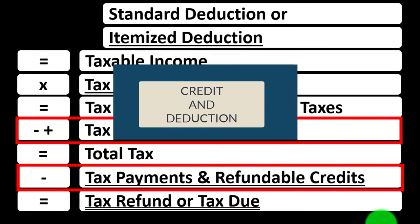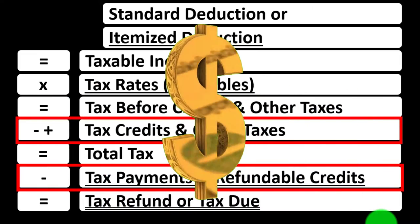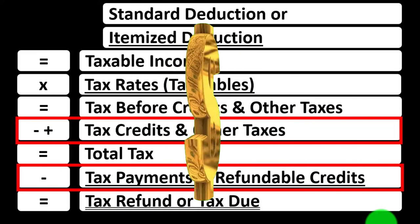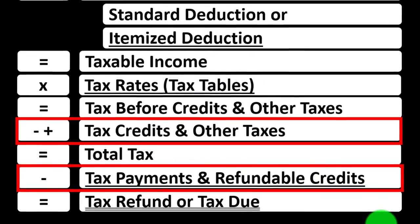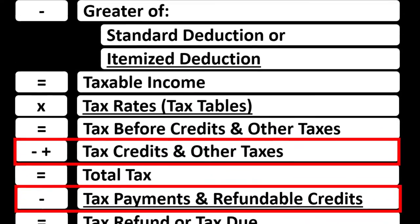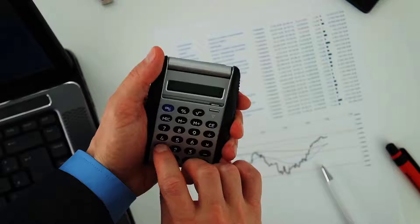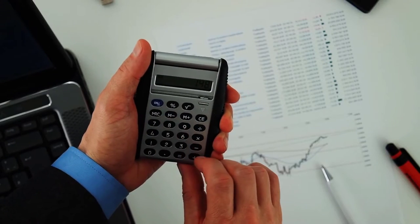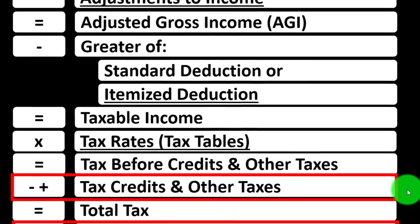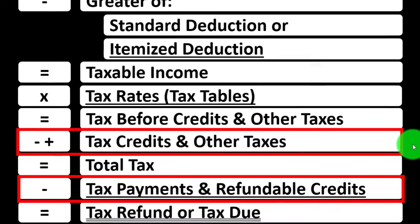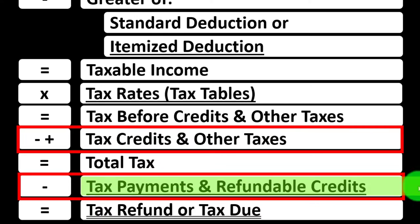Both deductions and credits are good for taxes, but if you had a dollar of credit versus a dollar of deduction, the credit would basically be better because you'd get the full value of that dollar in tax benefit, as opposed to a deduction, which would just simply be reducing the taxable income and then the tax would be calculated upon it. Also note that the credits have two primary categories: non-refundable credits and refundable credits.